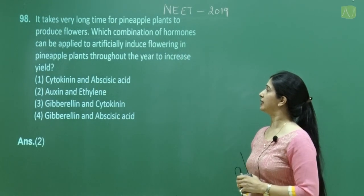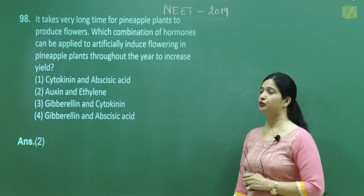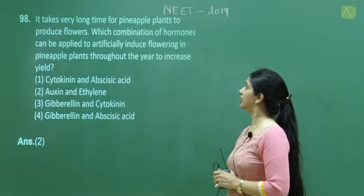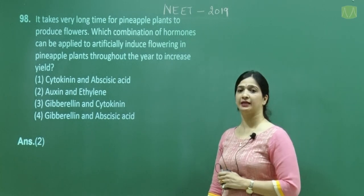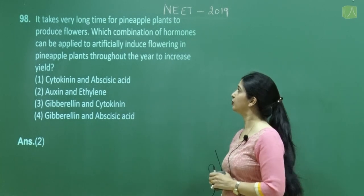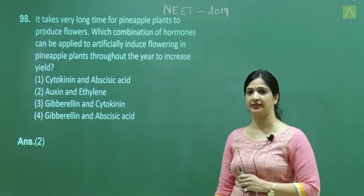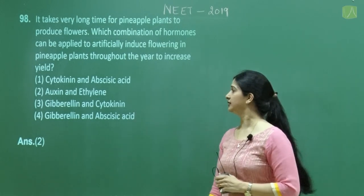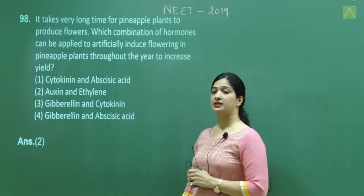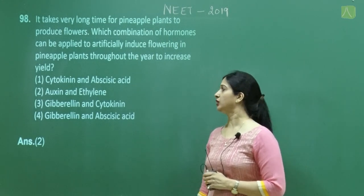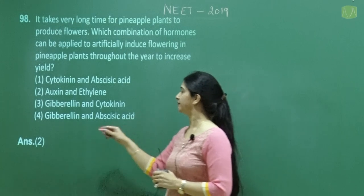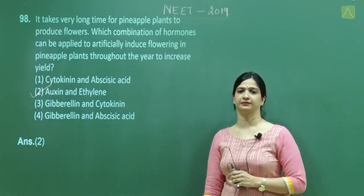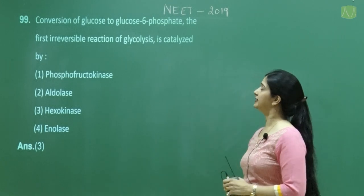Question number 98: Pineapple plants take very long to produce flowers. Which combination of hormones can artificially induce flowering throughout the year? Option 1, cytokinin and abscisic acid, is incorrect. The correct answer is option 2: auxin and ethylene, both of which can be used to enhance flowering in pineapple.